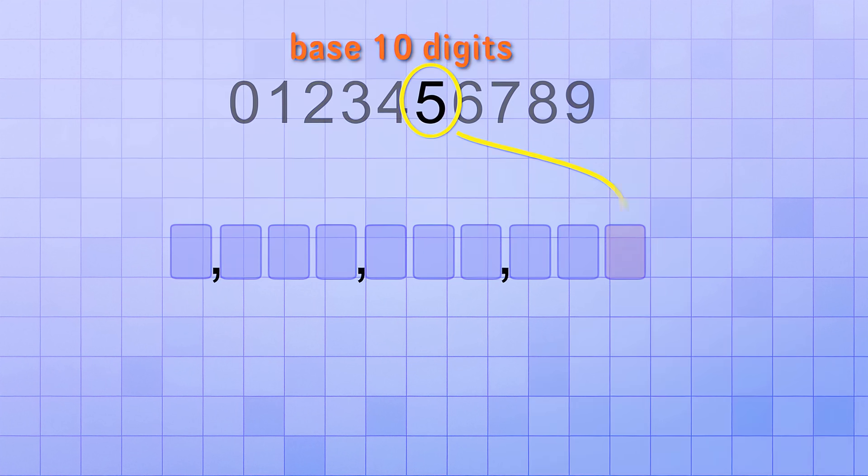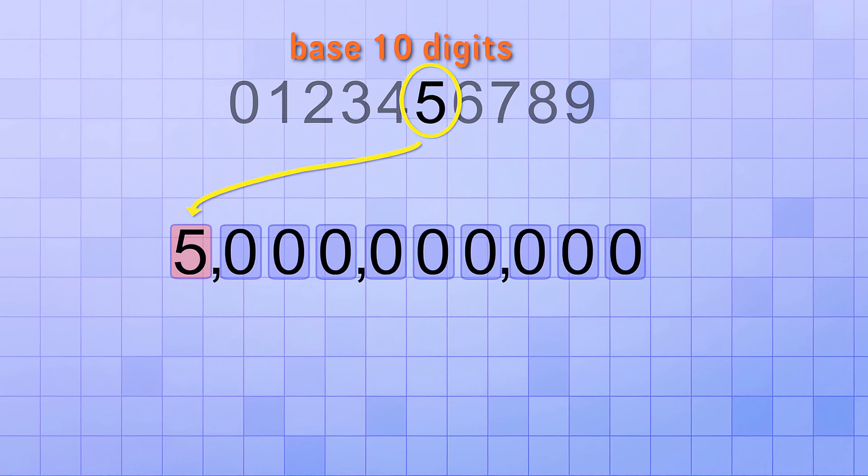If the digit 5 is in the ones place, it just means 5. But if a 5 is in the tens place, then it means 50. And if a 5 is in the hundreds place, it means 500. And it's the same for bigger number places. A 5 in the hundreds thousands place means 500,000. And a 5 in the billions place means 5 billion. See how a digit's place affects its value?